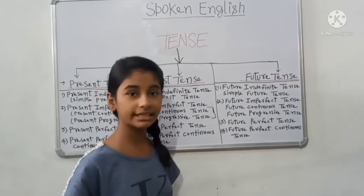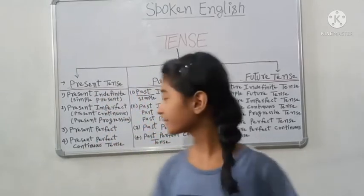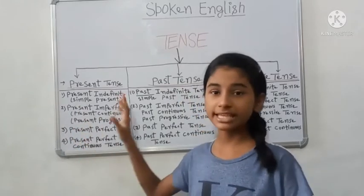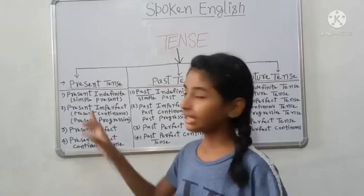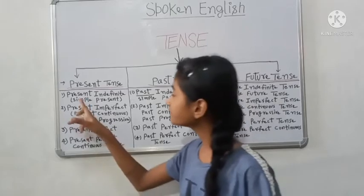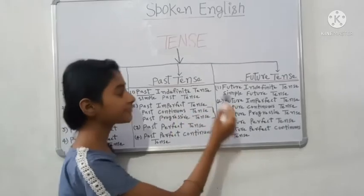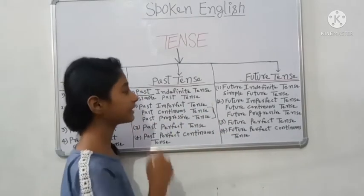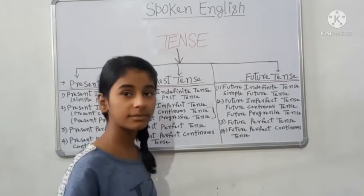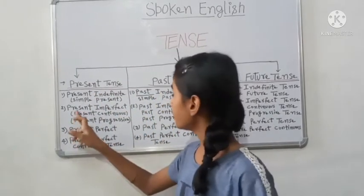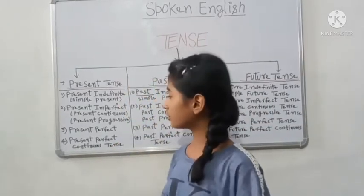Now, there is no need to worry about remembering all of these. Why? Because if you remember them once, it becomes simple. All tenses share the same pattern — Present Indefinite, Past Indefinite, Future Indefinite: what is common? The word Indefinite. In fact, across all the different parts, what has changed is just the time word — past, present, or future. That's it.